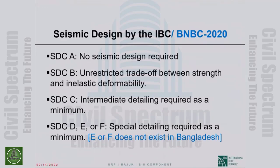Design category A requires no seismic design — not applicable in Bangladesh. Category B allows unrestricted trade-off between strength and inelastic deformability. Category C requires intermediate detailing as a minimum. Category D requires special detailing as the minimum level — the trade-off is no longer unrestricted.